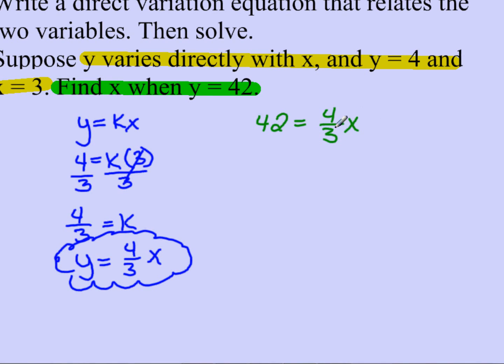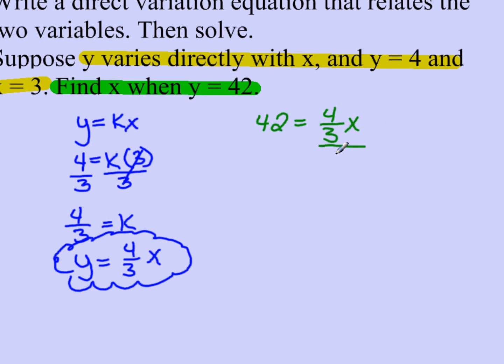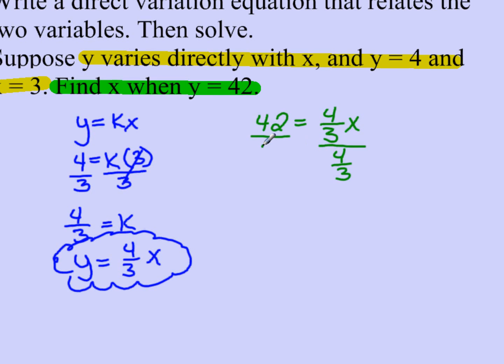Now I need to get x by itself. So in this case, since it's 4 thirds times x, the opposite of that is divide. So I'm going to divide this by 4 thirds and I'm going to divide 42 by 4 thirds. So these cancel.